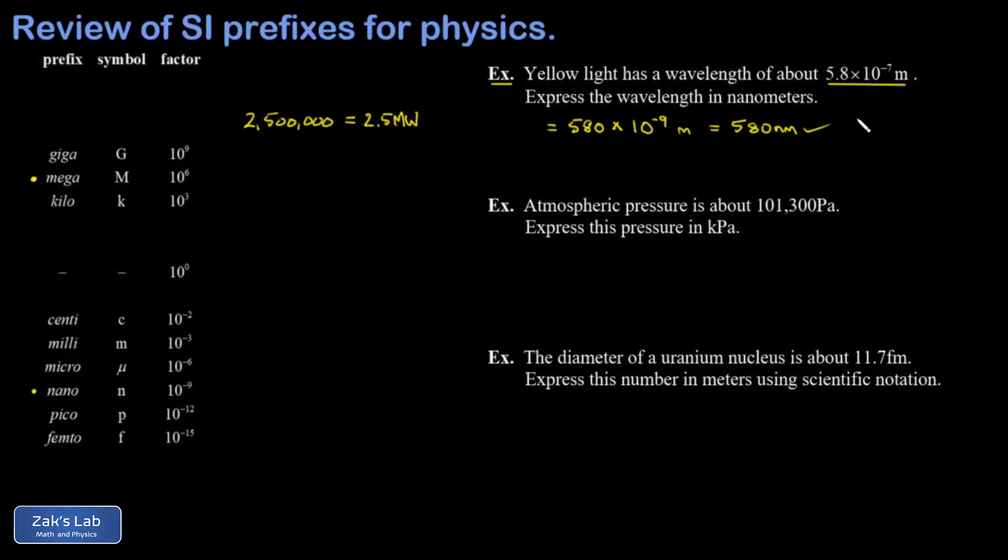So nanometers are the units we'll typically use when we're discussing wavelengths of visible, ultraviolet, and even x-ray light. In the second example, we're told that atmospheric pressure is about 101,300 pascals. And we're asked to express this in kilopascals. When we look at our chart, we see that the prefix kilo means 10 to the third or 1,000. So it's as simple as this. I could say this is 101.3 thousand pascals or 101.3 kilopascals.